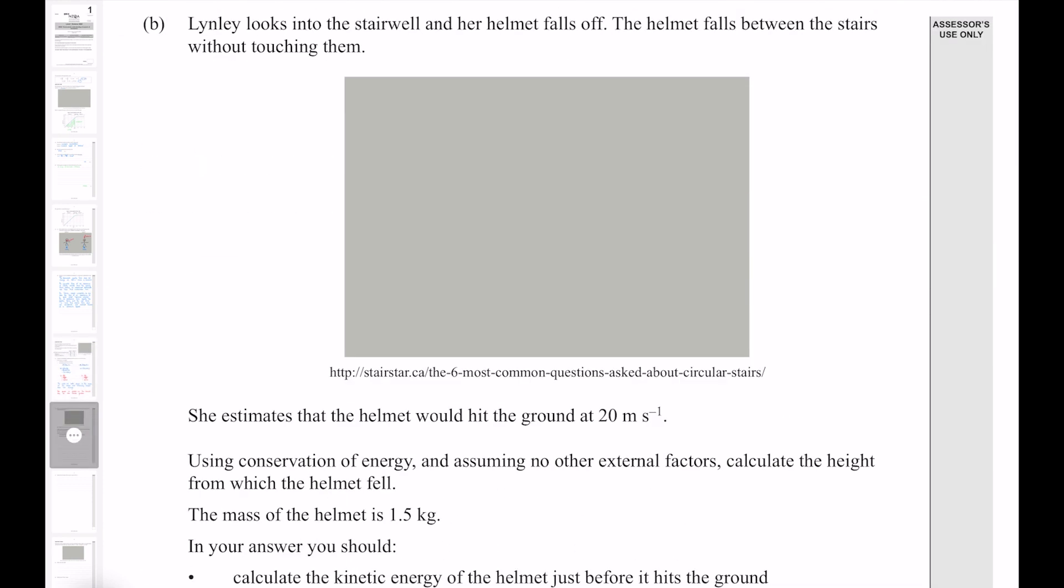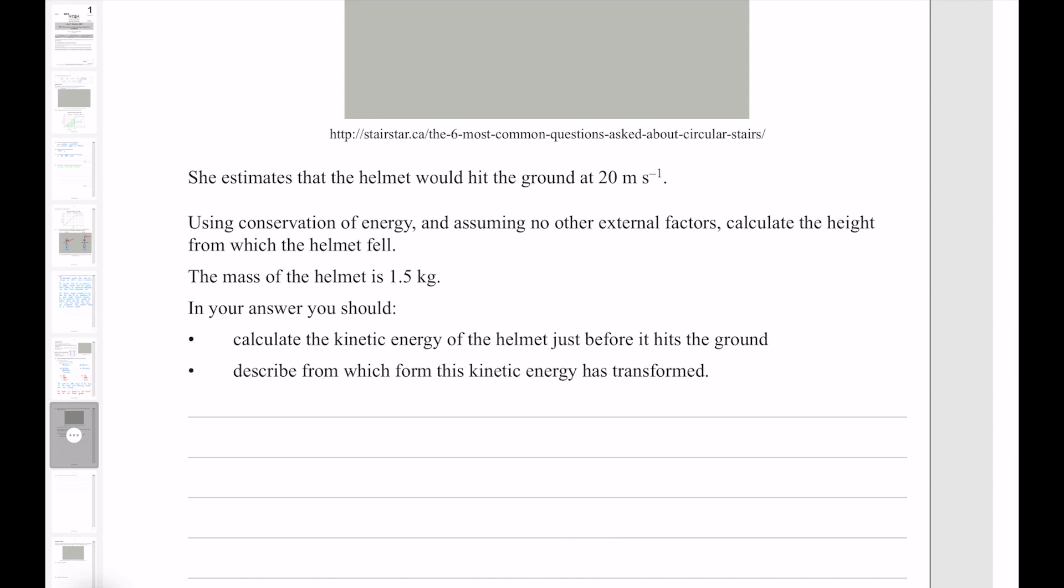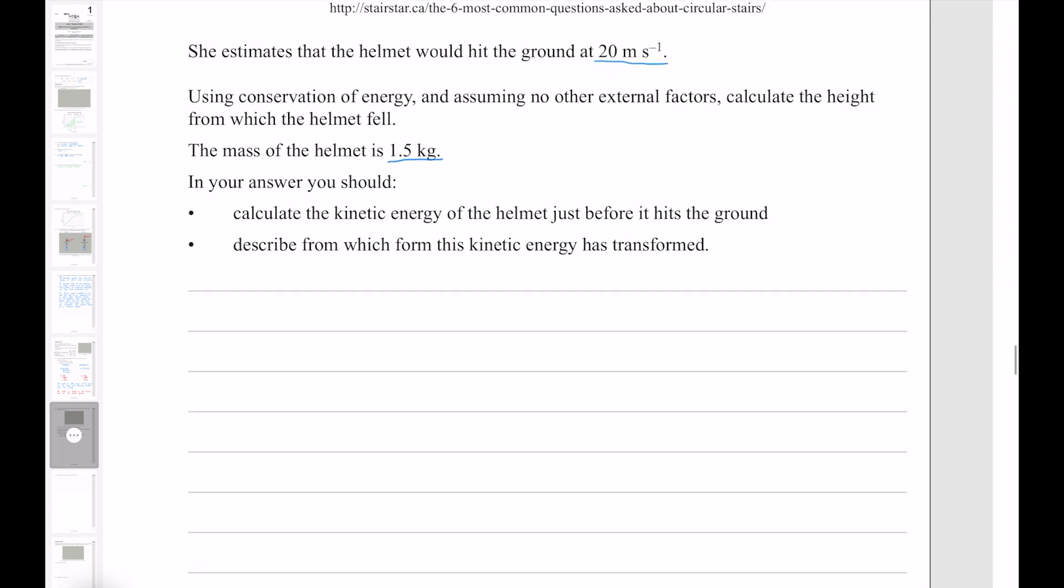Linley looks into the stairwell, and her helmet falls off. The helmet falls between the stairs without touching them. She estimates that the helmet would hit the ground at 20 meters per second. Using conservation of energy, and assuming no external factors, calculate the height from which the helmet fell. The mass of the helmet is 1.5 kilograms. In your answer, you should calculate the kinetic energy of the helmet just before it hits the ground, and describe from which form this kinetic energy has transformed. So we know the final velocity is 20 meters per second, and we know the mass of the helmet is 1.5 kilograms. We know the acceleration due to gravity, and we're trying to find the height.